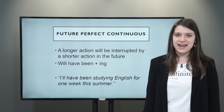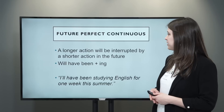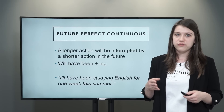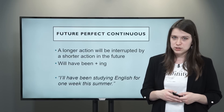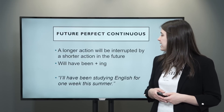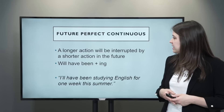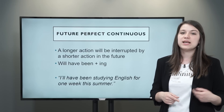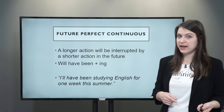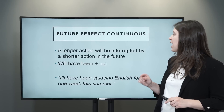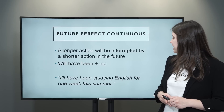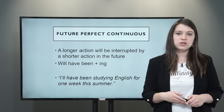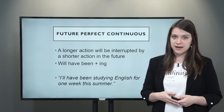Our last tense today is the future perfect continuous — this is a longer action in the future interrupted by a shorter action. We form the future perfect continuous with will have been plus the verb with -ing. For example: I will have been studying English for one week this summer. This is specifying the duration and time.